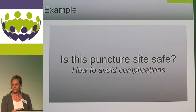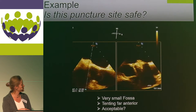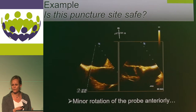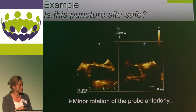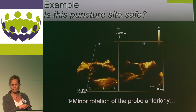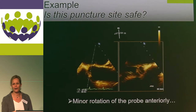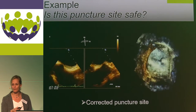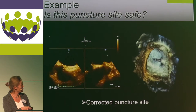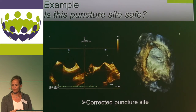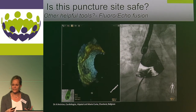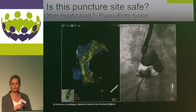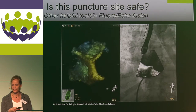Another concern: is the puncture site safe? Here is an example with a very small fossa where the tenting is very far anterior — not a nice position. With a minor rotation of the probe, you can see how close this puncture site would be to the aorta, which is not a safe area to puncture. The puncture site is then corrected to a more posterior location, which was accepted. Fluoroscopy and fluorovaloying can help determine where your tenting is in the interatrial septum.